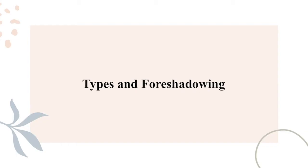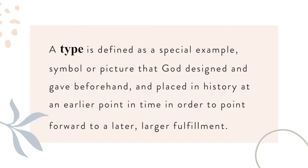Also within the text, we find types and foreshadowing that also lend credibility as we build our case for the trustworthiness of God's Word. What do I mean by types and foreshadowing? A type is defined as a special example, symbol, or picture that God designed and gave beforehand and placed in history at an earlier point in time in order to point forward to a later, larger fulfillment. Said more simply, a type or foreshadowing is where we see an image in the Old Testament that foreshadows or points to something in the New Testament.